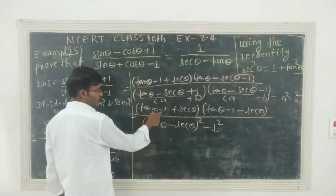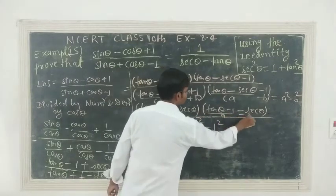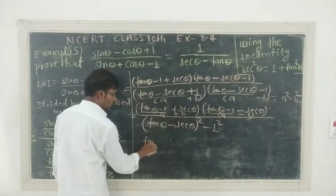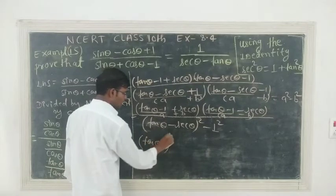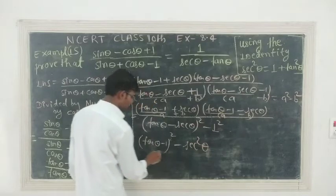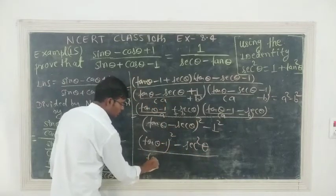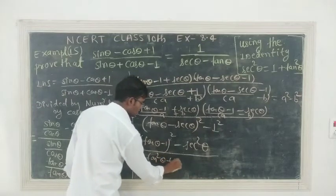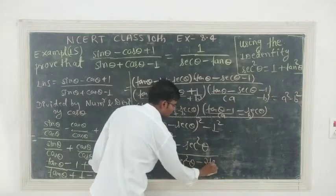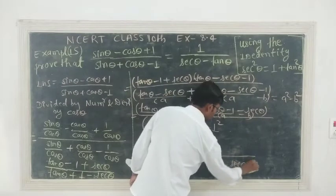From the denominator: A is (tan theta minus 1), this will be A square minus B square, so (tan theta minus 1) whole square, and minus 1 square. Now for the numerator: A square minus B square — (tan theta minus 1) squared is a squared, and minus B square means minus sec square theta. Expanding: a squared plus b squared minus 2ab gives 2 tan theta into sec theta, and minus 1 squared gives minus 1.